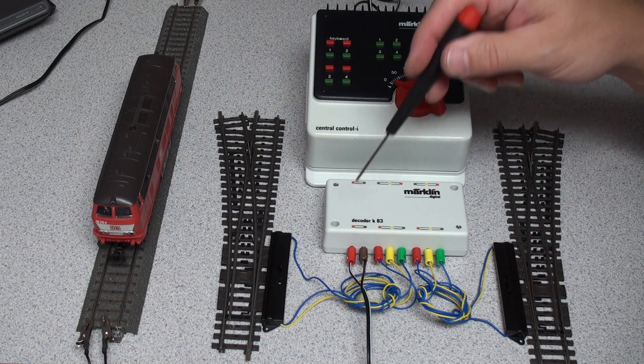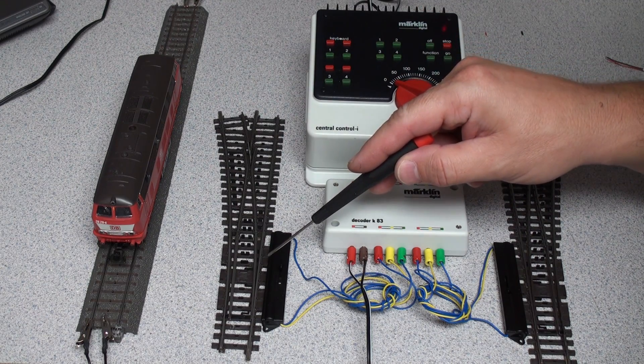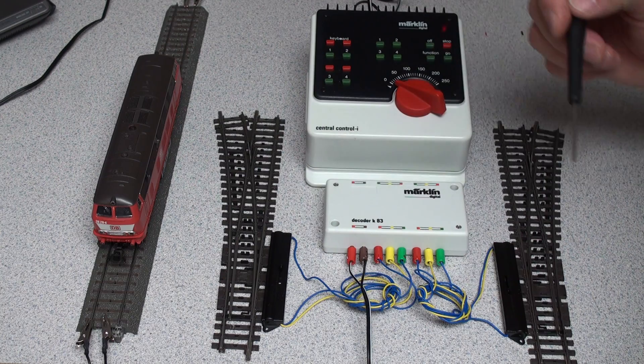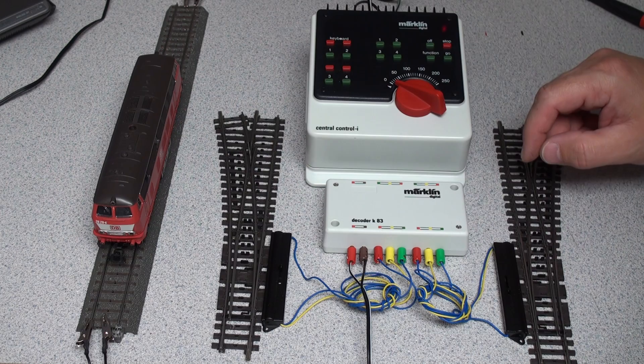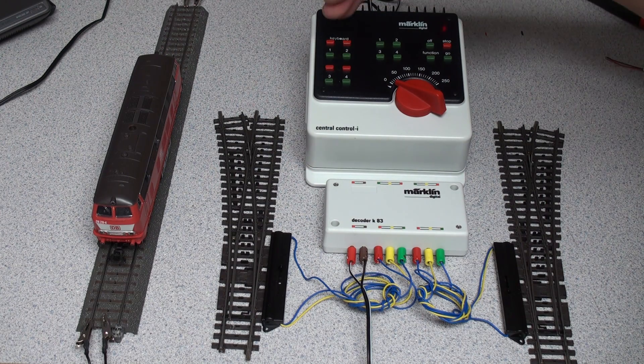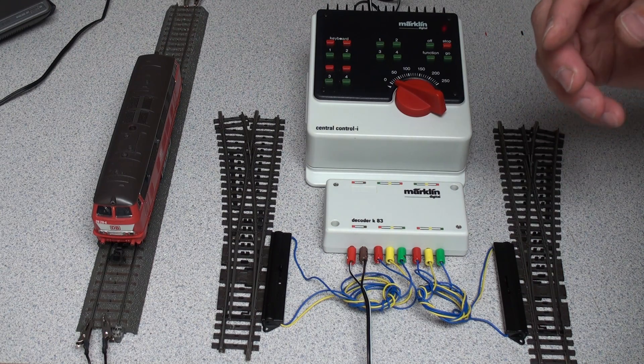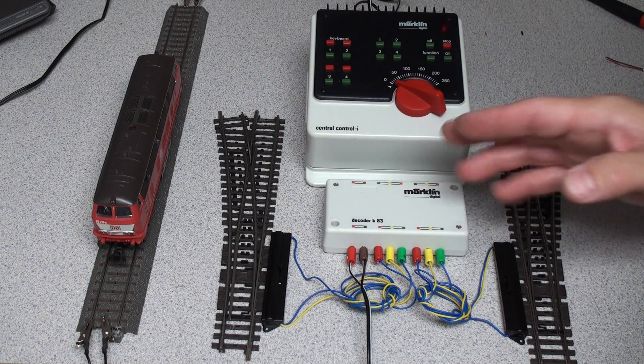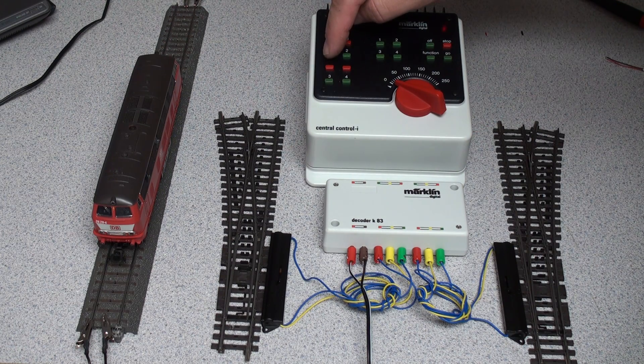Let's power it up. The addresses for the switches for this K83 are selected as 1, 2, 3, 4 with the dip switch inside the unit. I'll show you how to operate it.